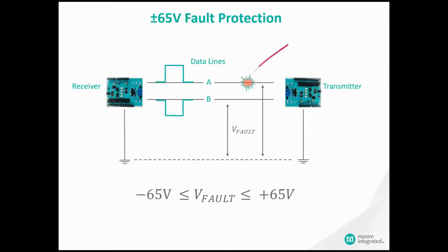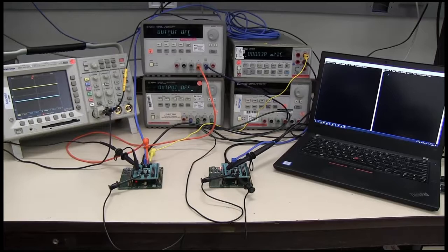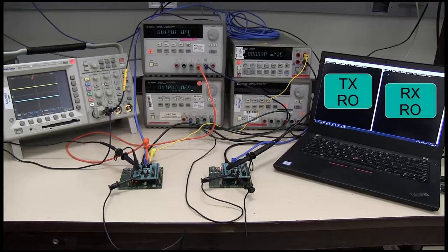A fault or overvoltage can occur, for example, when someone miswires a local power supply line to the data ports, or when a cable carrying both data and power lines are shorted together when their insulators are degraded due to heat and vibration from nearby equipment. To demonstrate a voltage fault, I have attached a plus 65 volt DC signal on the A-line and then removed it. Both transmitter and receiver are powered through USB from the laptop and are referenced to earth ground.